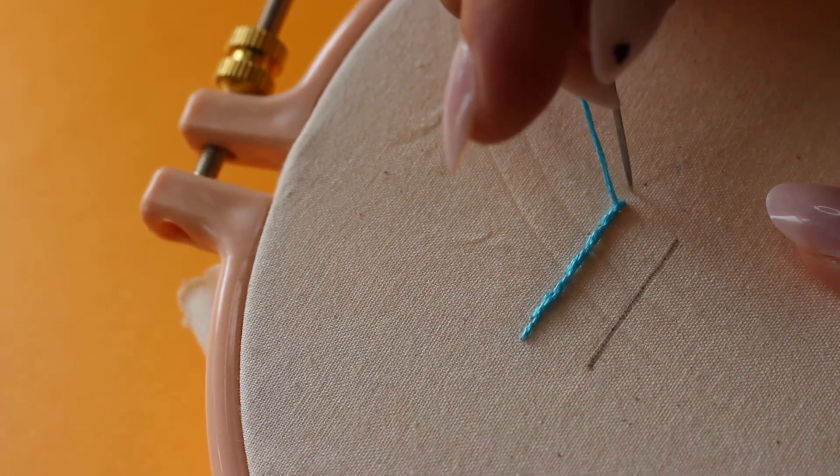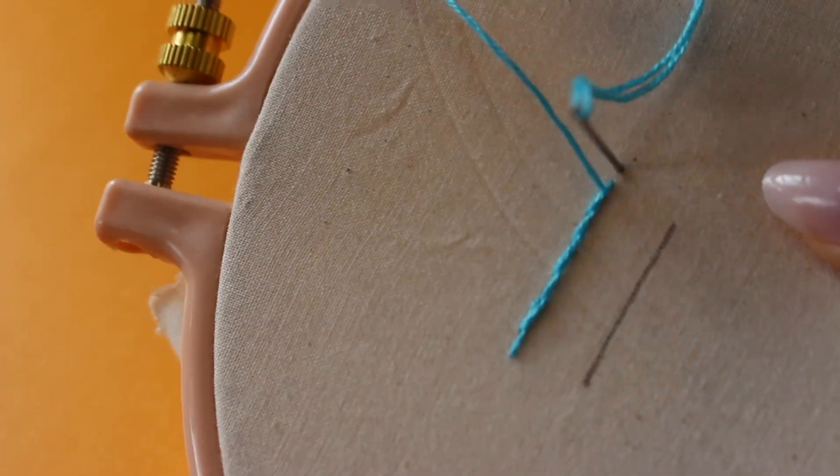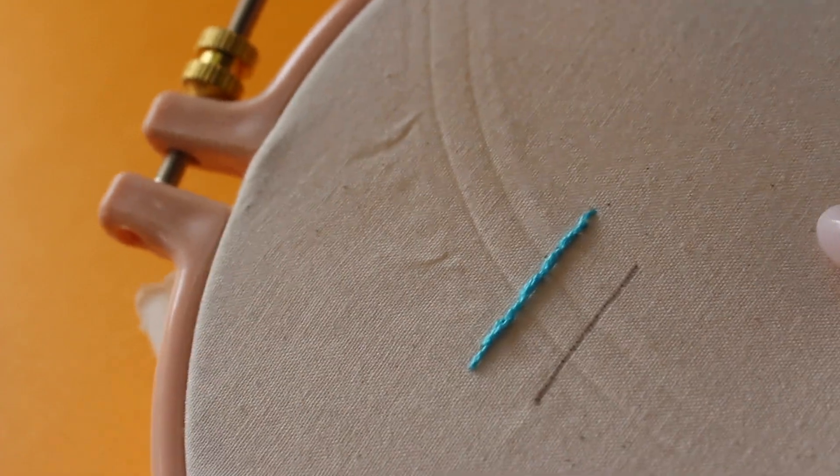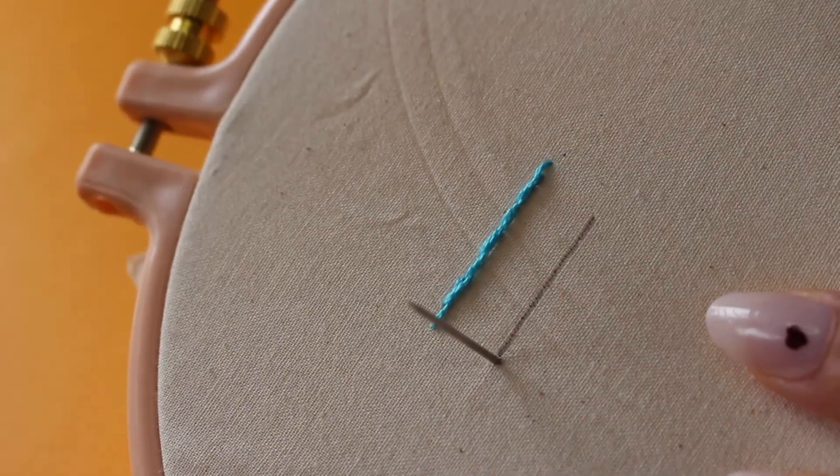You could just finish that last stitch in a regular form and then tie off your knot in the back. Let's do the second line again.